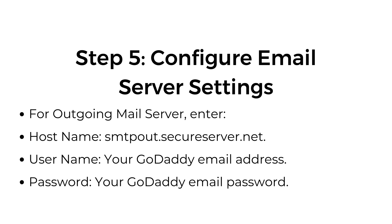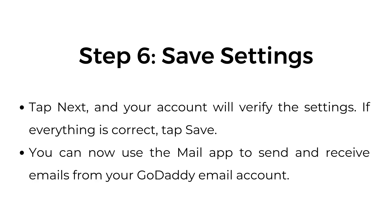For the outgoing mail server, enter: Host Name — smtpout.secureserver.net. Username — your GoDaddy email address. Password — your GoDaddy email password. Step six, save settings: tap Next and your account will verify the settings. If everything is correct, tap Save. You can now use the Mail app to send and receive emails from your GoDaddy email account.